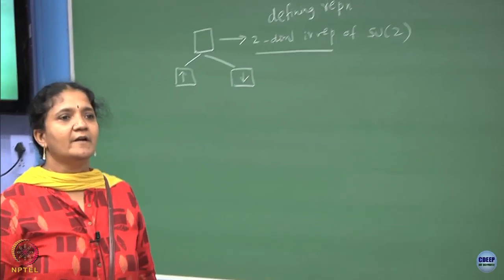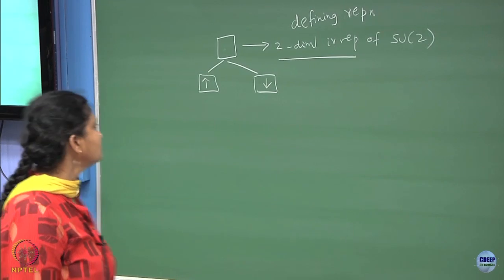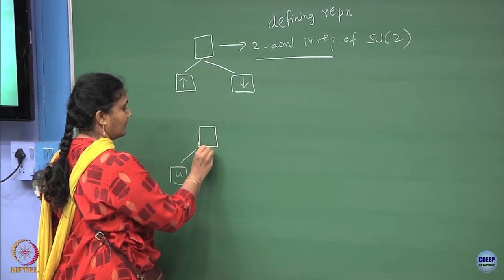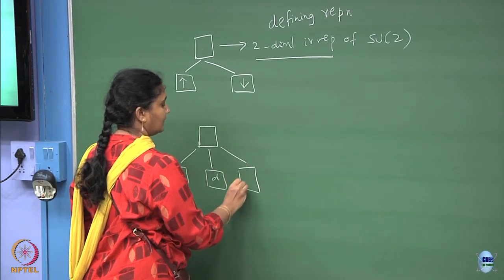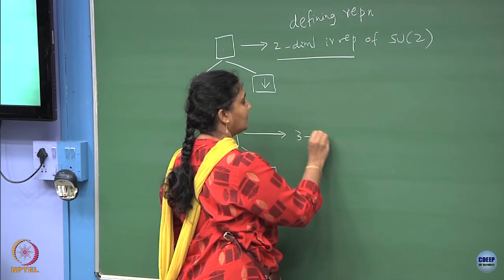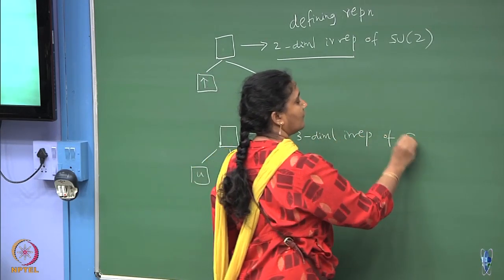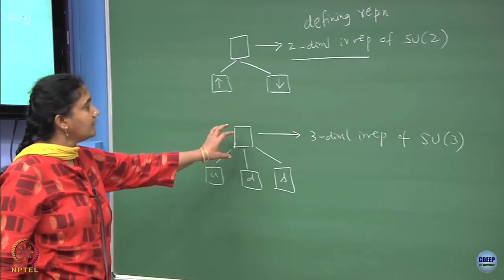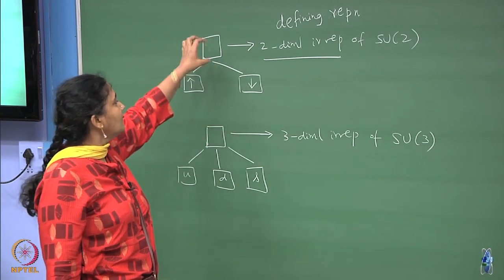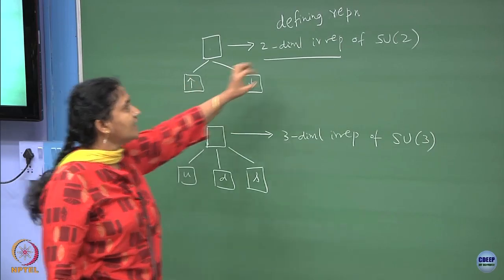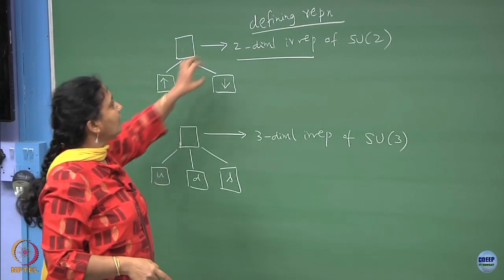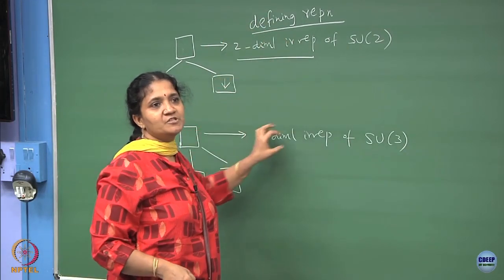The lowest non-trivial irreducible representation of SU(2) is two-dimensional. If you go to SU(3), this box can have inside an up, a down, and a strange. That is why we use this diagram to denote the 3-dimensional irrep of SU(3). The same diagram has different meanings for different groups. The defining representation is two-dimensional for SU(2) and three-dimensional for SU(3).